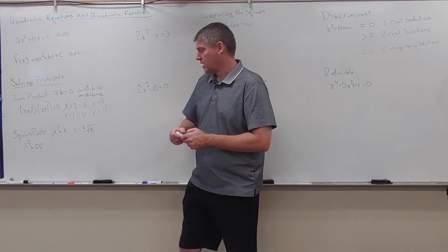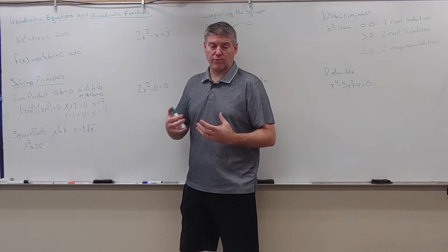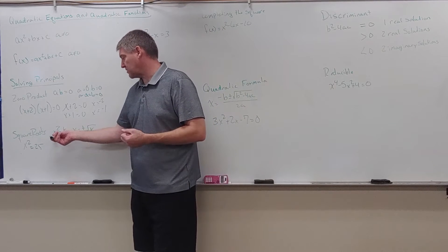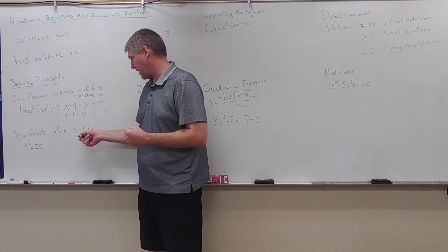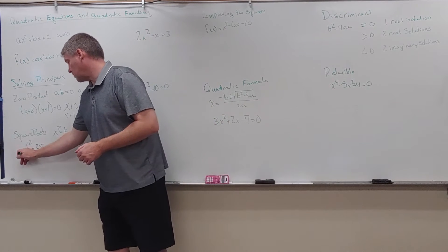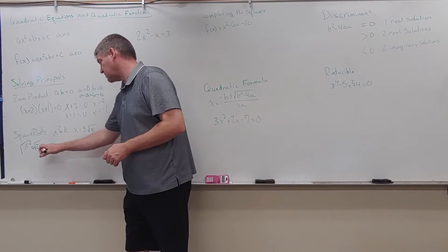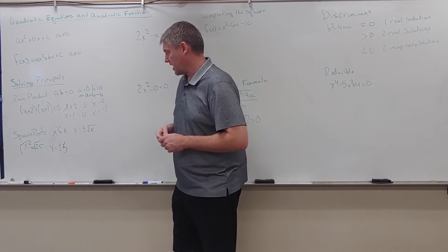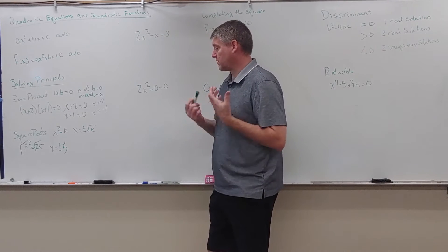The next principle is square roots. If I can isolate the squared term, I can take square roots. If x squared equals k, then x equals plus or minus the square root of k. So if x squared equals 25, I square root both sides and get x equals plus or minus 5. If it were x squared equals 17, it would be plus or minus the square root of 17.